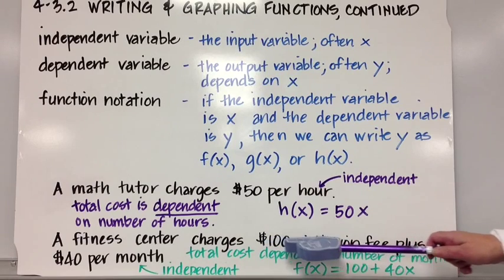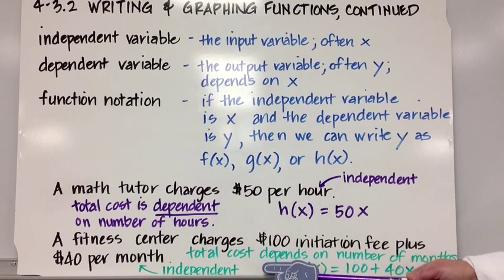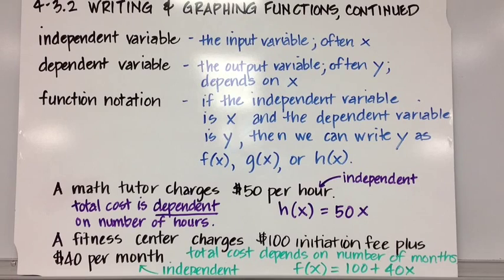A fitness center charges $100 initiation fee plus $40 per month. In this case, the independent variable is the month. The number of months you're a member determines the total cost, the dependent variable. We could write that in function notation: f(x) = 100 + 40x, where x is the number of months. 100 is the initiation fee, a constant, and 40 is the cost per month for that membership.